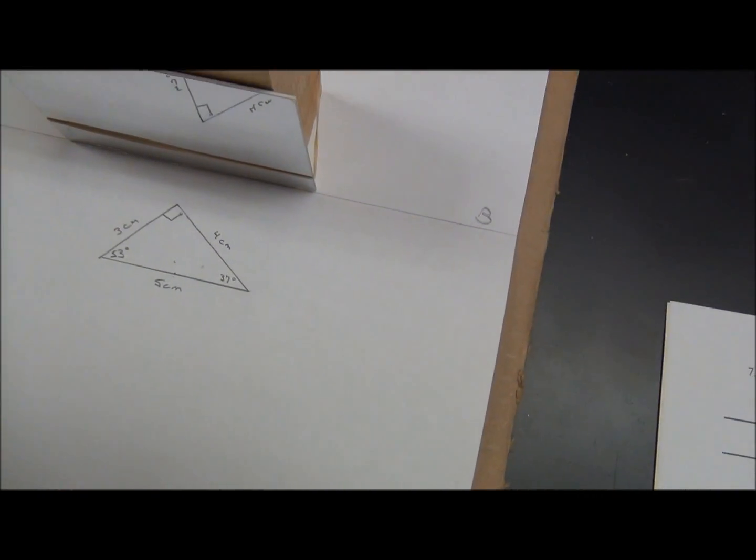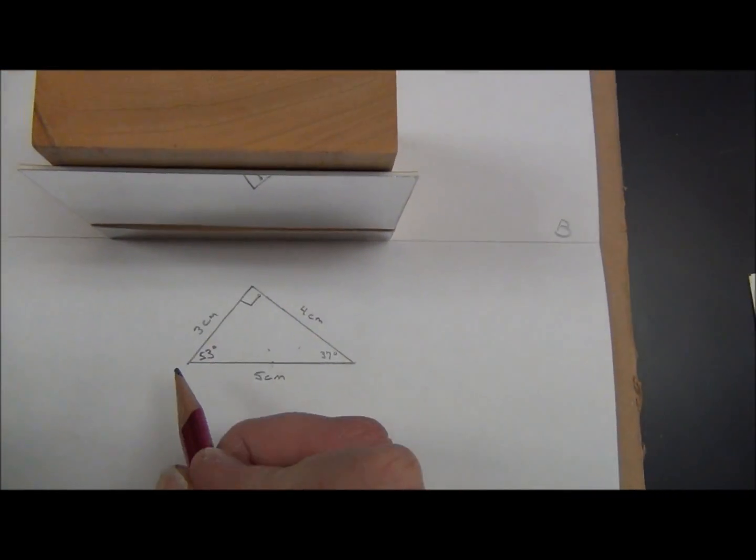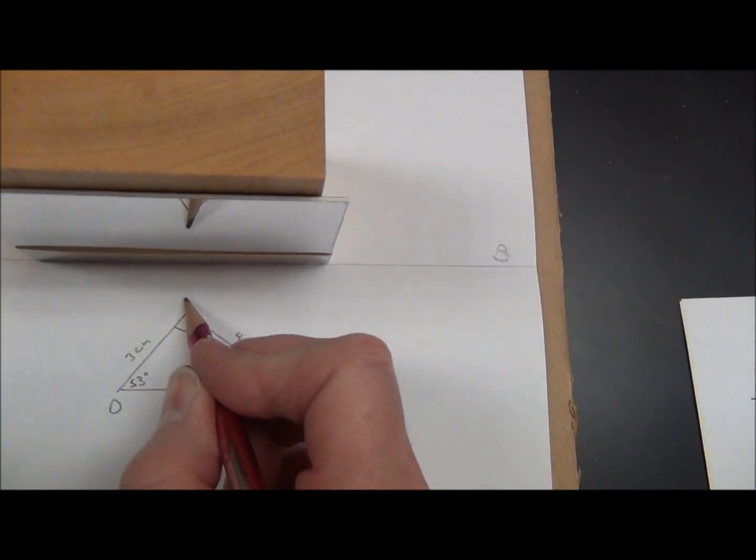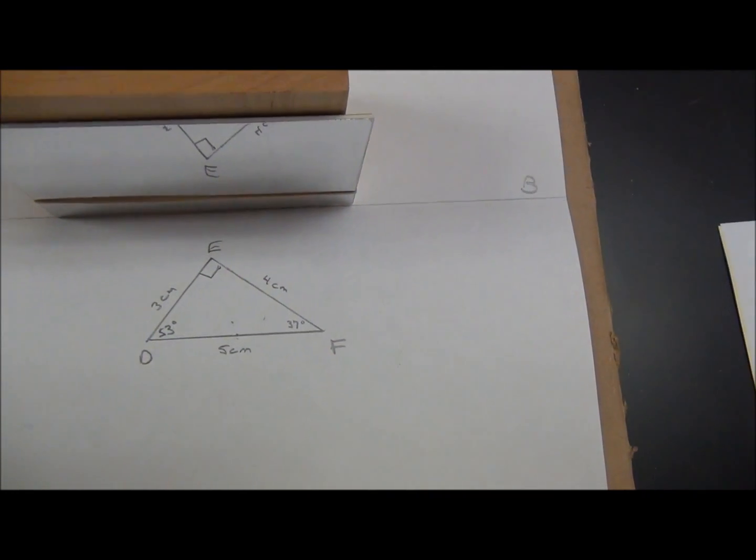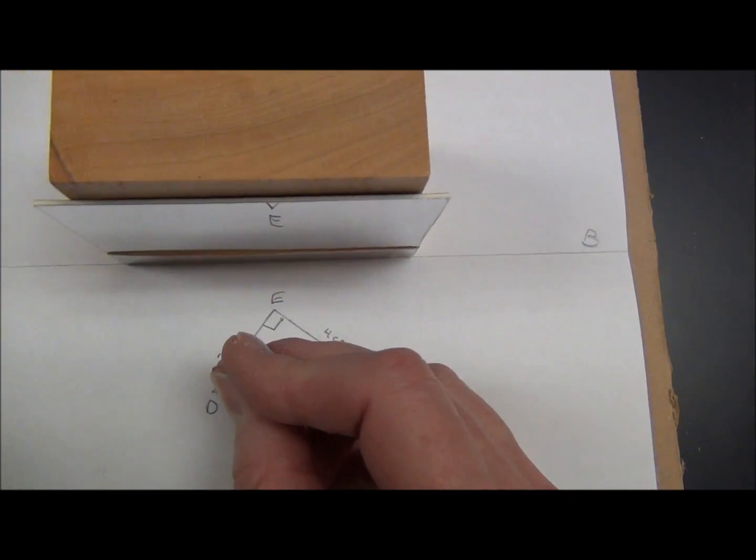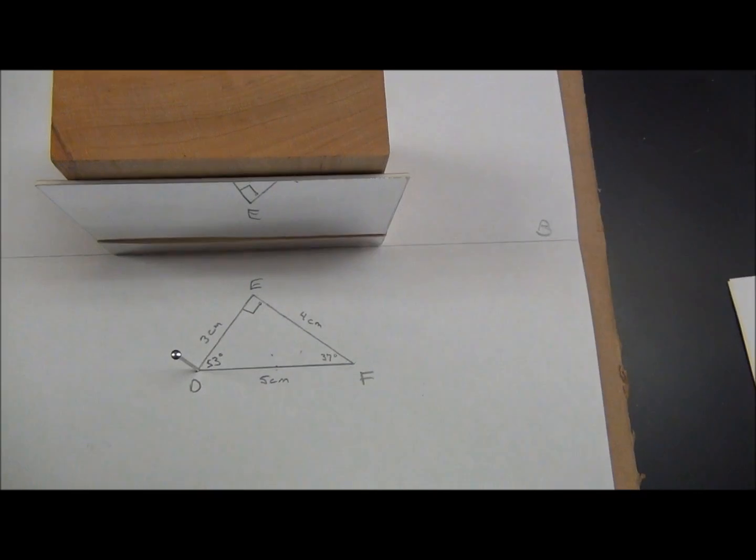We're going to label the triangle D, E, and F. That means this is D, this is E, this will be F. Stick a point in D,